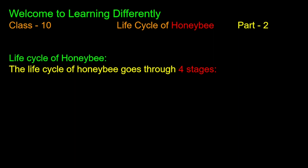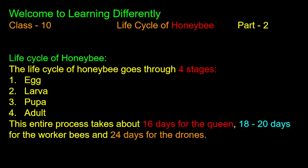There are four stages of the honeybee: egg, larva, pupa, and adult. These are the four stages of the honeybee. The entire process takes about 16 days for the queen.